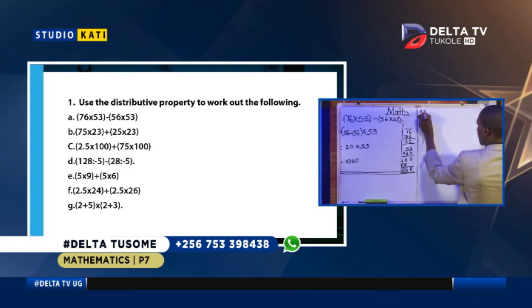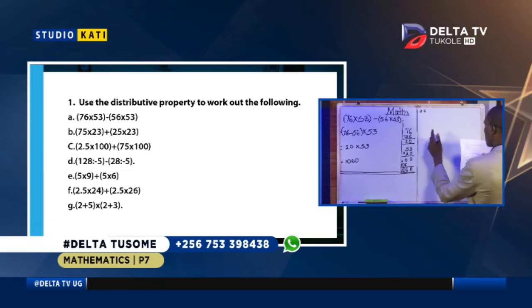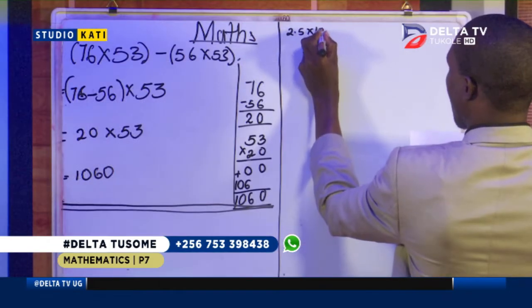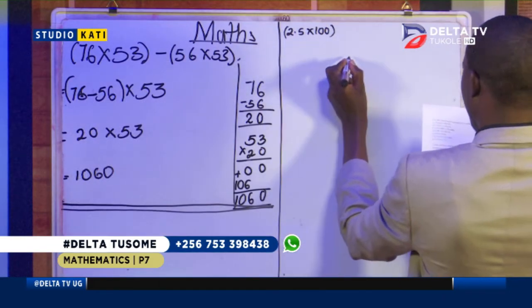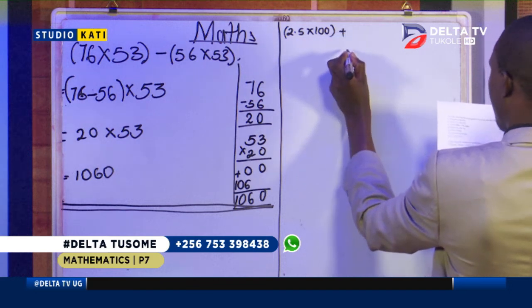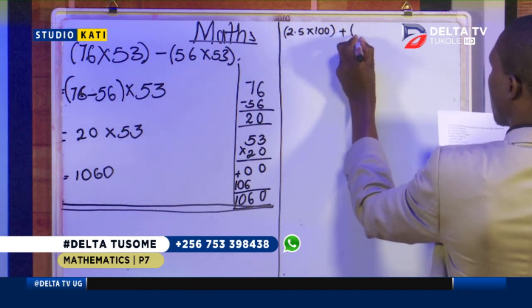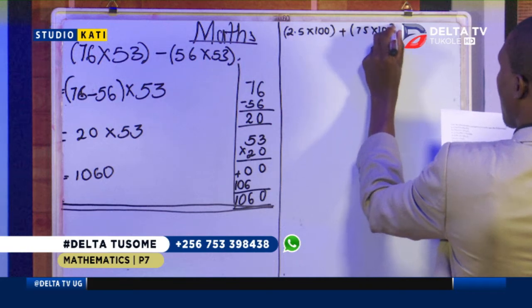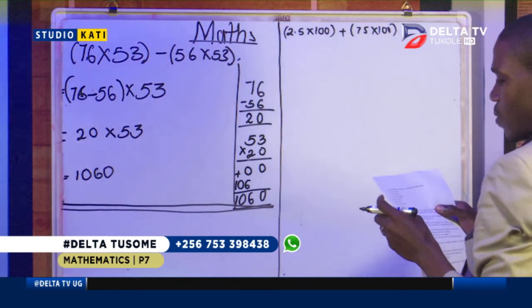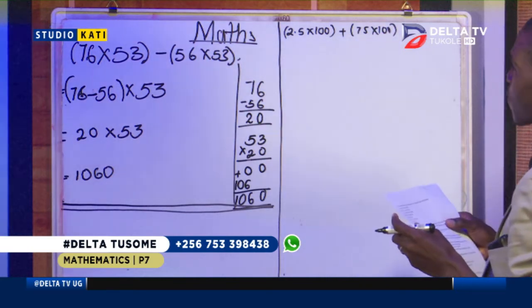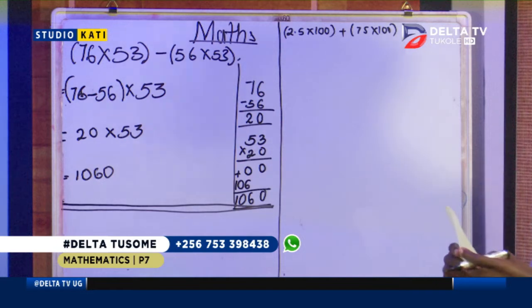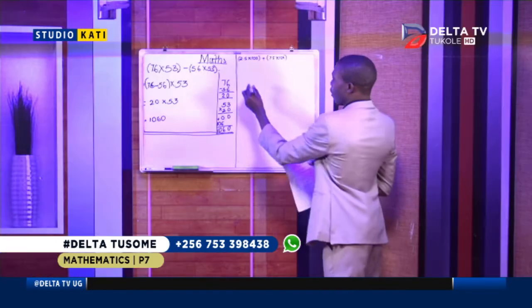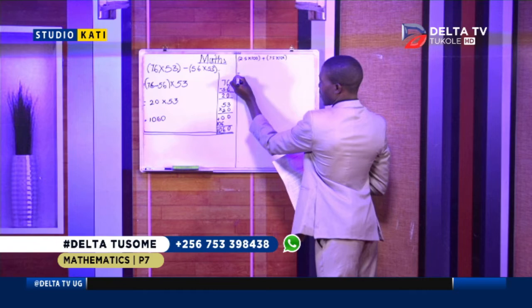Number C says: 2.5 times 100 plus 75 times 100. Now as I told you at the beginning, we always begin by writing equals.